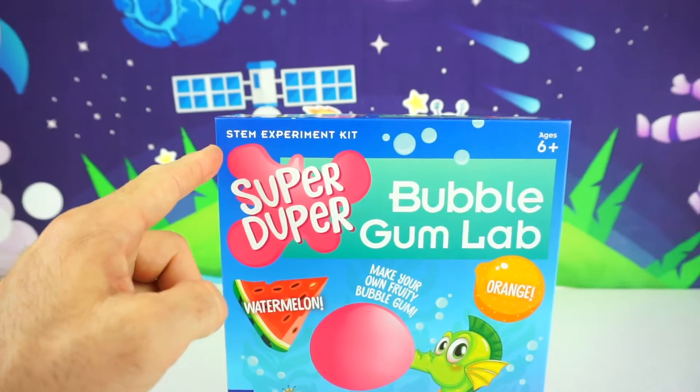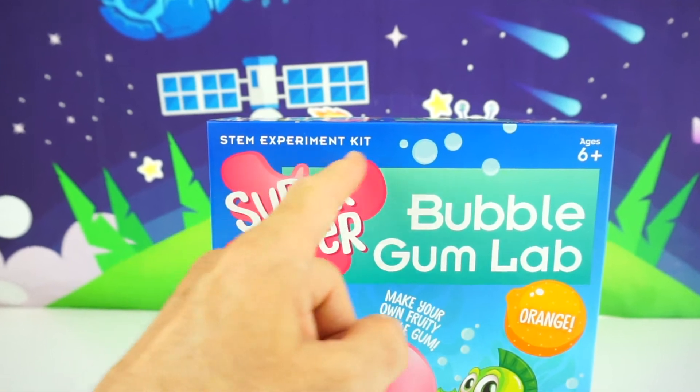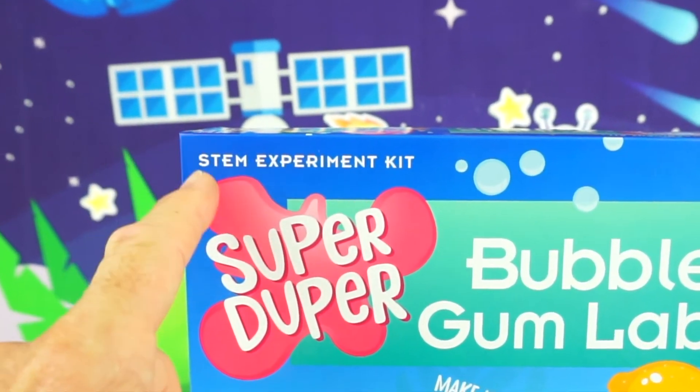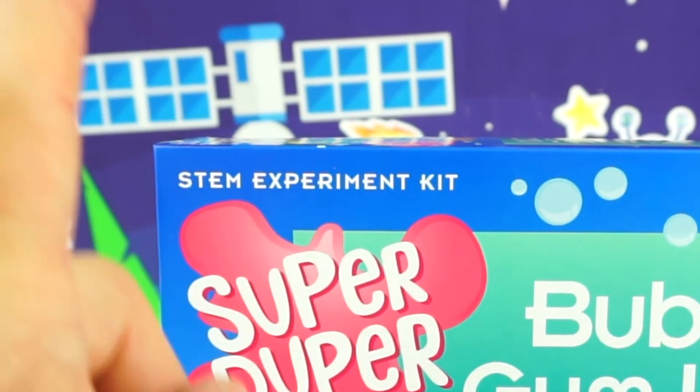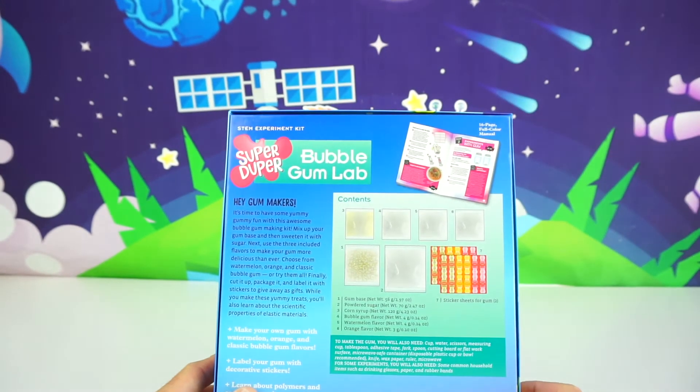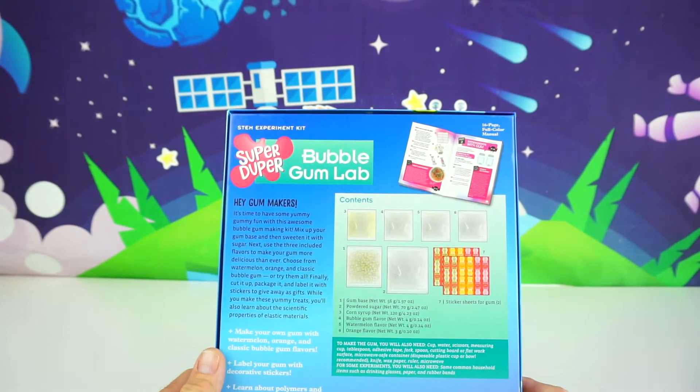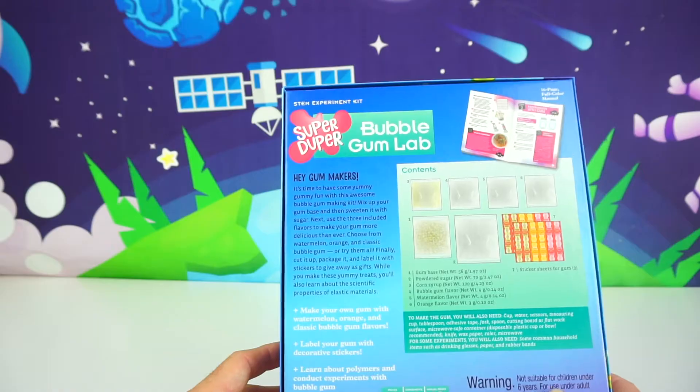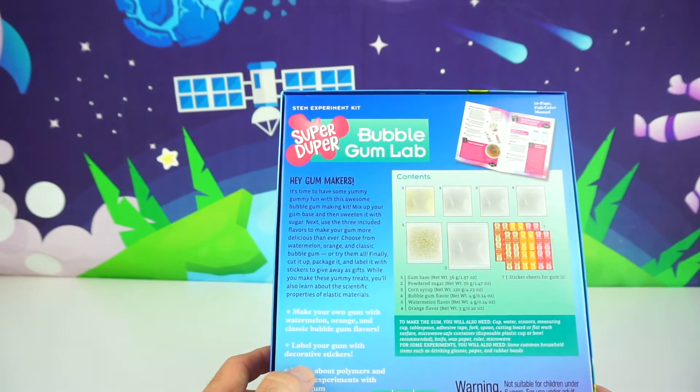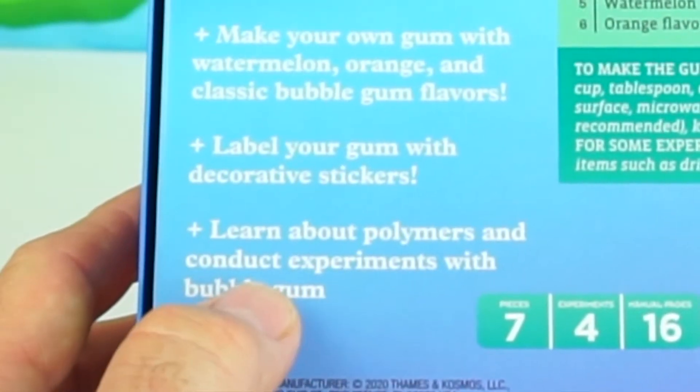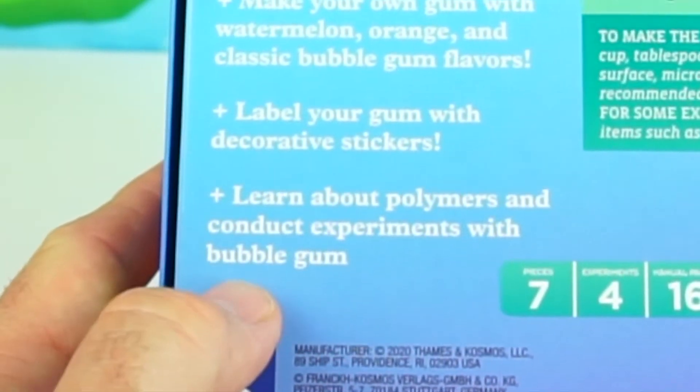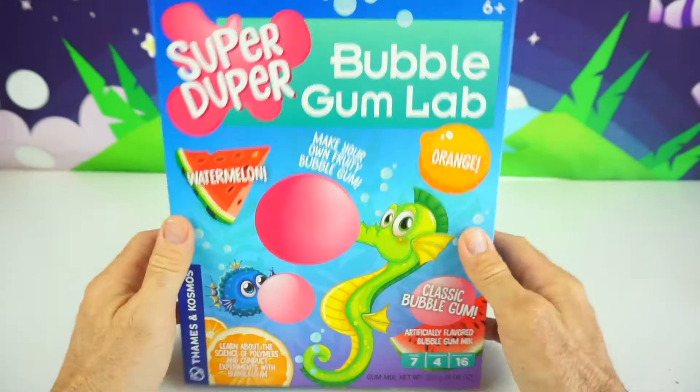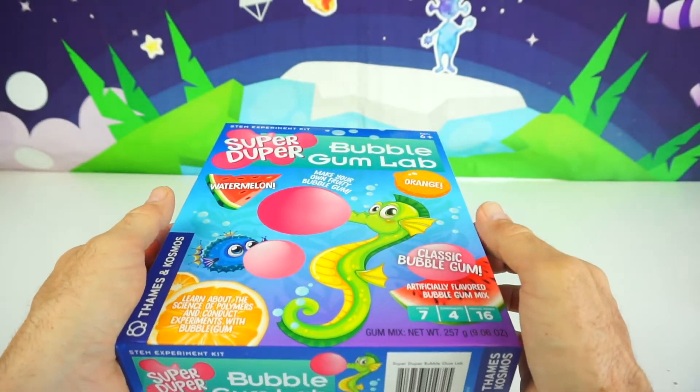And this is also a STEM experiment kit, which means science, technology, engineering, and math. So on the back it shows a list of the contents and it has our full color manual included. Also, we will be able to label our gum with decorative stickers, learn about polymers, and conduct experiments with bubblegum. Okay, time to open it up and check it out.